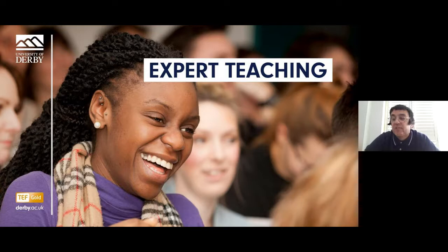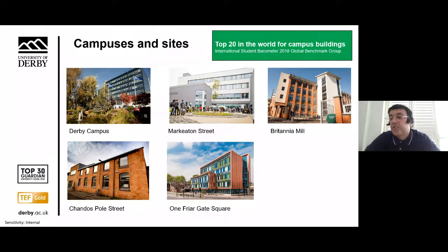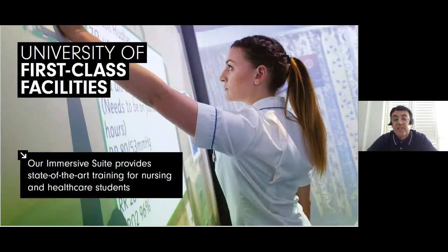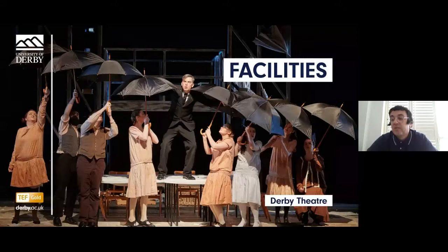Our campus is a short walk from the city center and halls of residence, with a number of sites across Derby and Derbyshire. We've been ranked in the top 20 in the world for campus buildings. Our facilities ensure students experience environments and technology on par with the highest levels of industry. Examples include a forensic house with seven replica crime scenes, a purpose-built crown courtroom, a fully operational Bloomberg Financial Lab stock exchange environment, and an NHS-standard hospital ward and clinical skills suite. We also own and run Derby Theatre, a working commercial theater in the city.